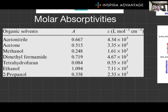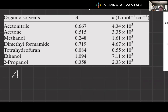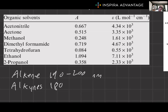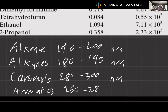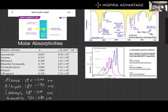UV-Vis spectroscopy is particularly useful for analyzing molecules with conjugated systems, such as those containing multiple double bonds or aromatic rings. The more conjugated a molecule is, the longer the wavelength of light it can absorb. For the MCAT, you should be familiar with the approximate wavelength ranges absorbed by different types of molecules: alkenes absorb around 190 to 200 nanometers; alkynes around 180 to 190 nanometers; carbonyls are higher at 280 to 300 nanometers; and aromatics are 250 to 280 nanometers. Keep in mind these are general ranges — actual absorption wavelengths can be influenced by substituents and solvent effects.